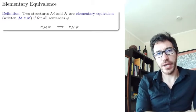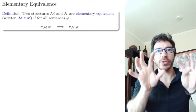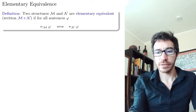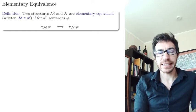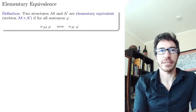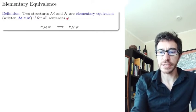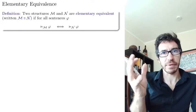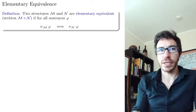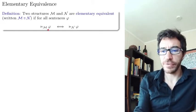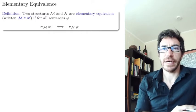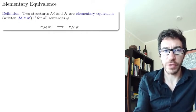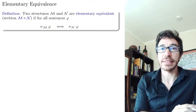The first of these is elementary equivalence. We say that two structures M and N are elementary equivalent if they satisfy exactly the same sentences. This is for all sentences phi in the vocabulary of M and N — they have to have the same vocabulary for this to make sense. If M satisfies phi if and only if N satisfies phi, we write this with a symbol with three lines, meaning elementary equivalent.